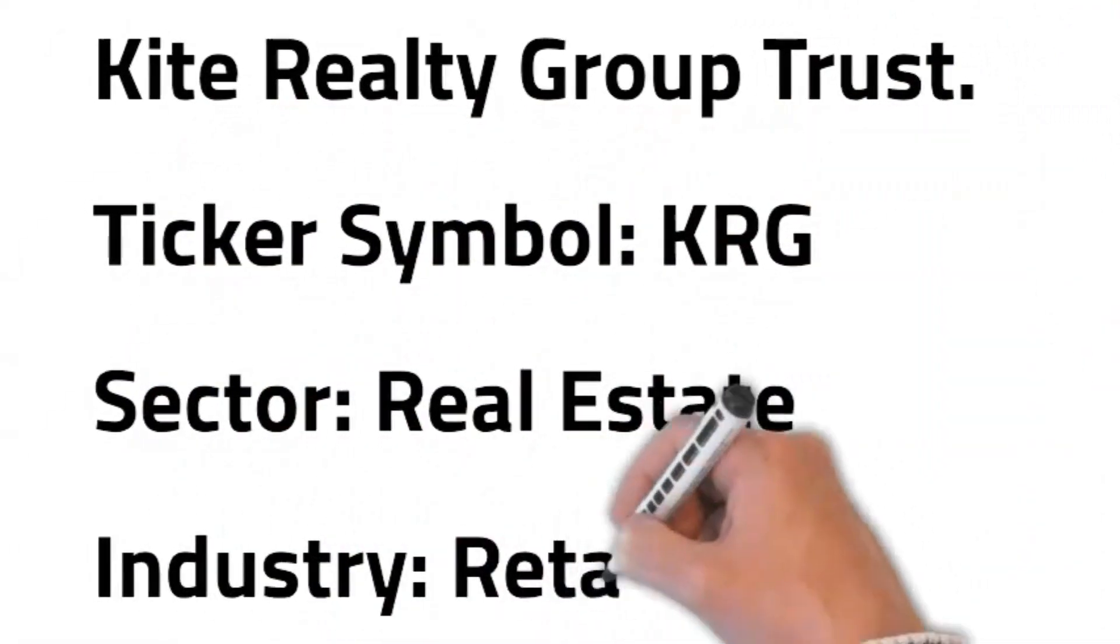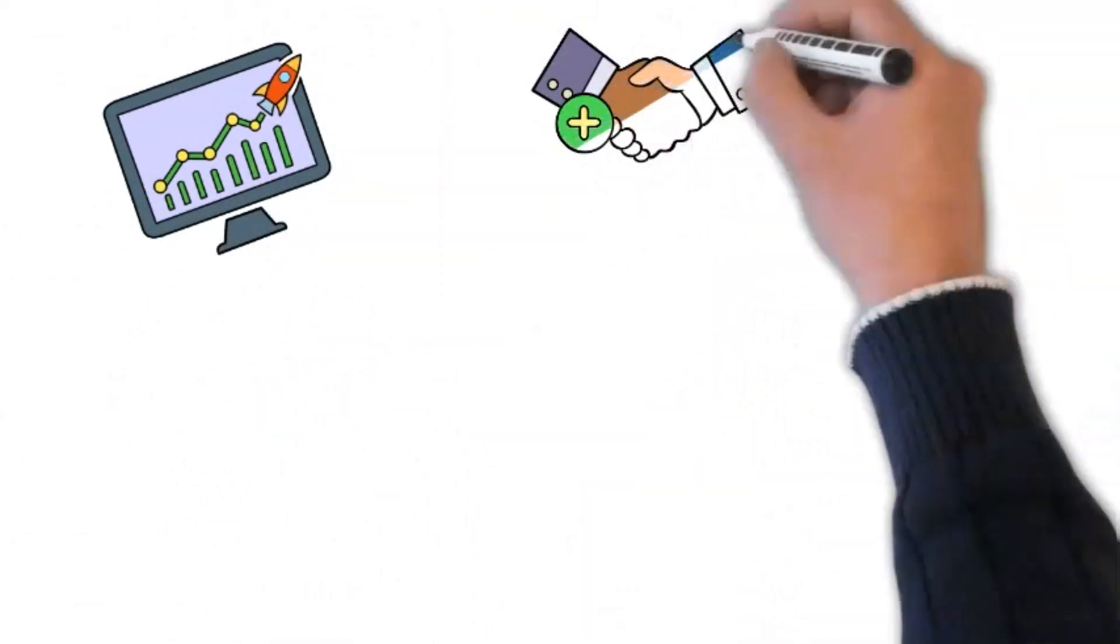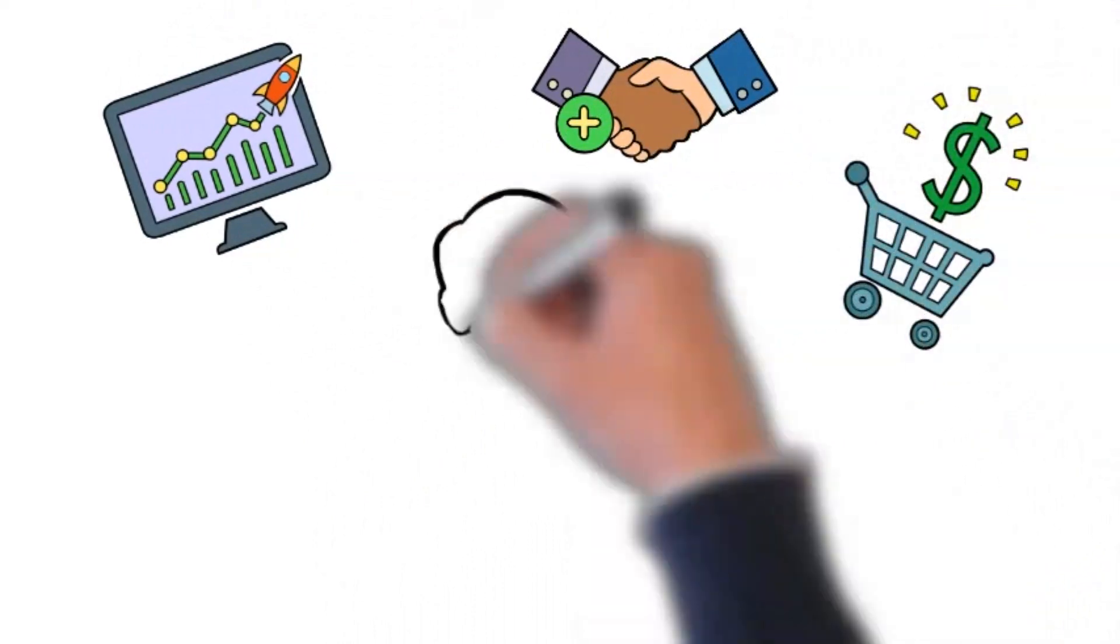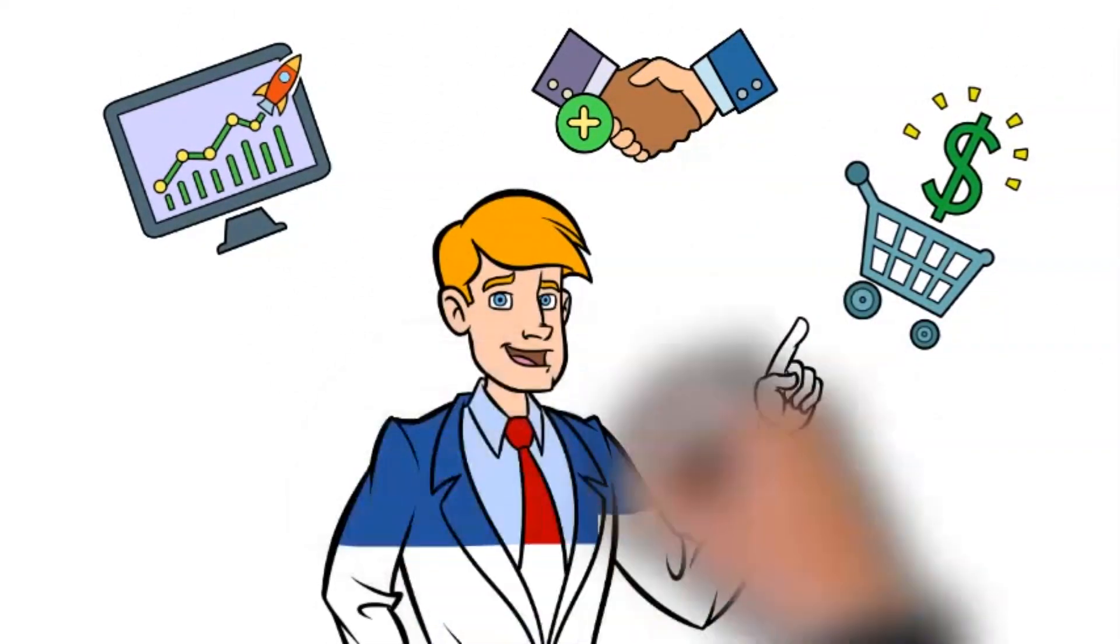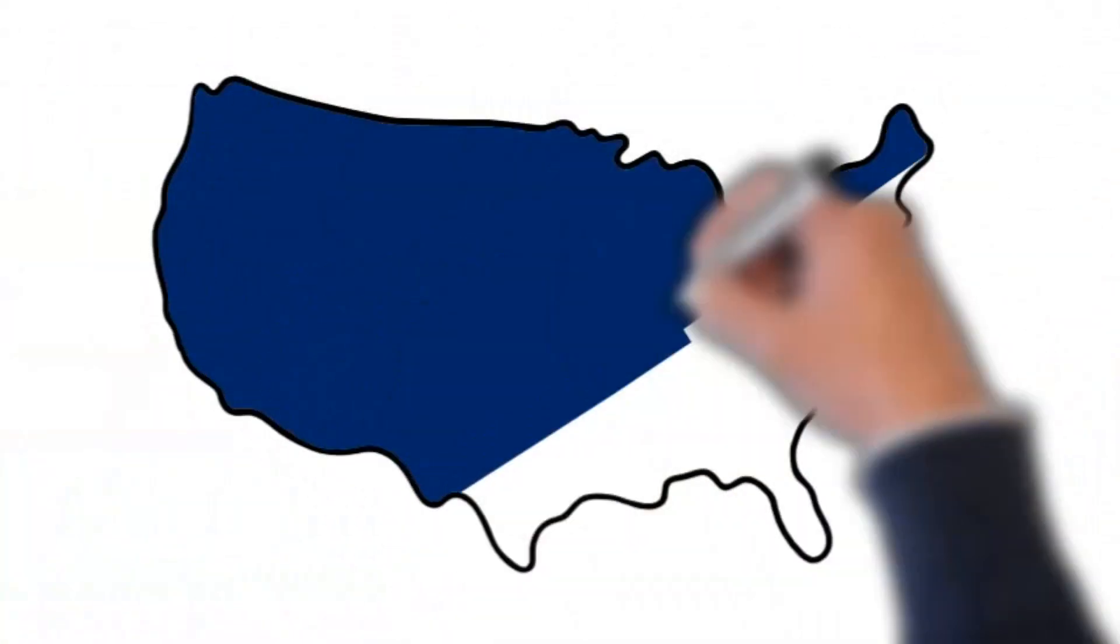Industry: Retail REIT. Kite Realty Group Trust operates as a real estate investment trust. It engages in the ownership, operation, acquisition, development, and redevelopment of neighborhood and community shopping centers in selected markets in the United States.